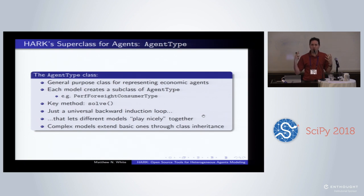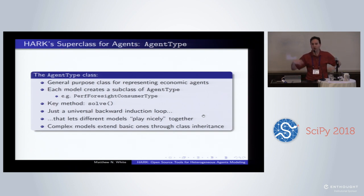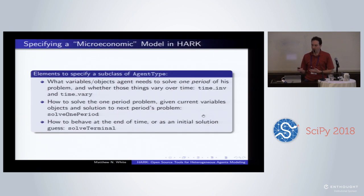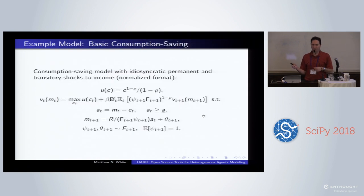Putting the backward induction loop into a common framework allows all these different types of agents to play nicely together. When you interact them in a so-called market subclass — our macro concept — as long as everything descends from AgentType, everything should play nicely together. I'll skip over some basics because I have only a few minutes left.